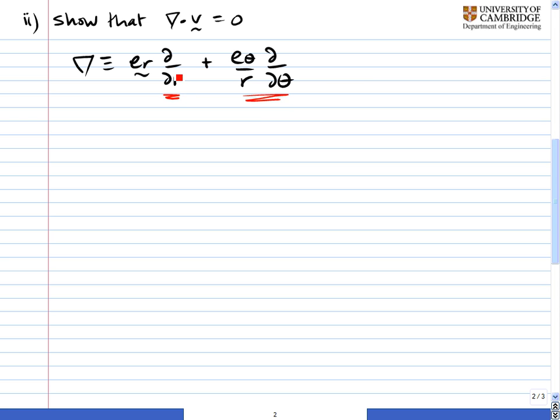So if r had dimensions of meters, we'd have to have a 1 over r with the e_theta. Now we have to be careful of the things that go on the right of the d by dθ expression.